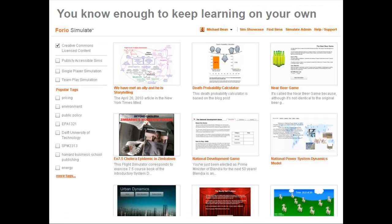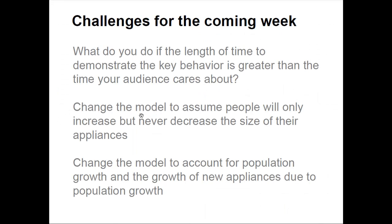Finally, here are challenges for the coming week. First: what do you do if the length of time needed to demonstrate a key behavior in your model is greater than the time your audience cares about? We've come up with some solutions over the years that can help. Second: change the model to assume people will only increase but never decrease the size of their appliances. Right now the model assumes it goes both directions — some might say that's plausible if electricity prices went way up.